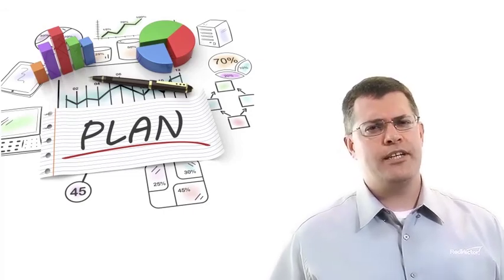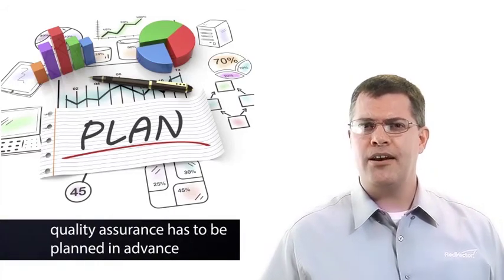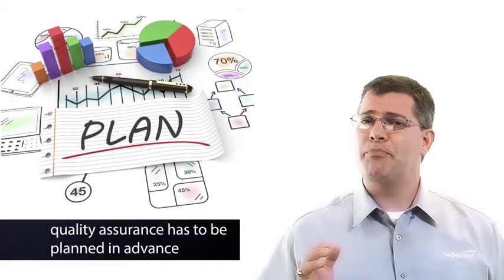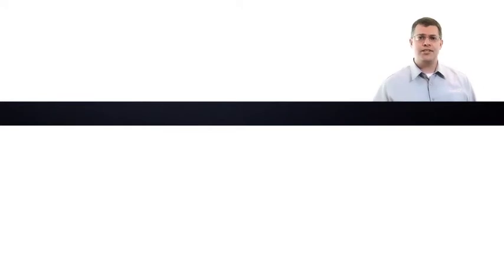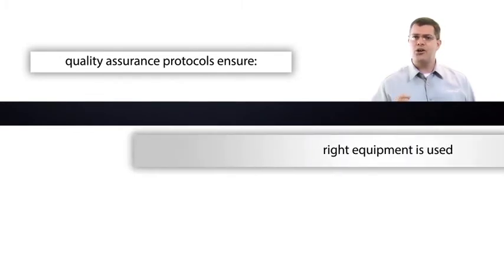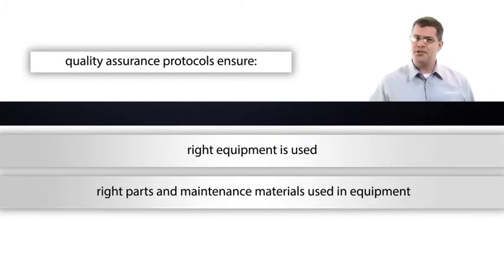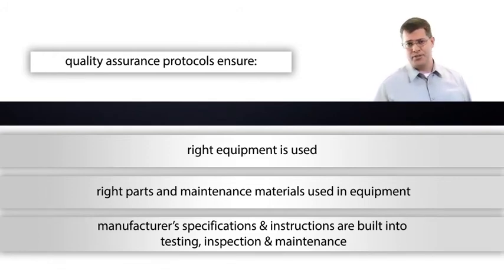Quality assurance in the mechanical integrity program has to be planned in advance. Whether associated with the equipment itself or the tests and inspections conducted on them, the quality assurance protocols are put in place to ensure the right equipment is used, the right parts and maintenance materials are used in the equipment, and that the manufacturer's specifications and instructions are built into the testing, inspection, and maintenance procedures.